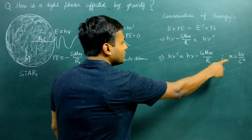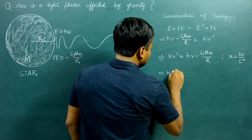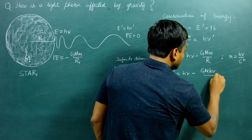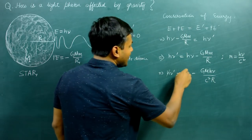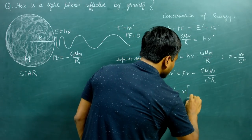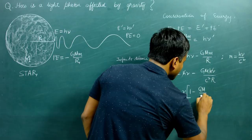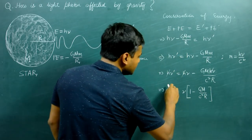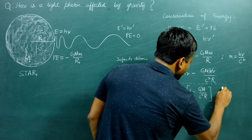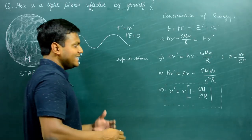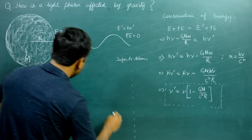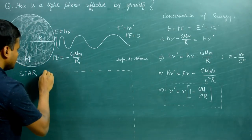Applying conservation of energy: E + PE = E' + PE'. This gives hν − GMm/R = hν'. Substituting m = hν/c²: hν − GM(hν/c²)/R = hν'. Cancelling Planck's constant h, we end up with: ν' = ν(1 − GM/c²R). This is the new frequency as the light photon completely escapes the gravitational pull of the star. We can also find the fractional change in frequency.